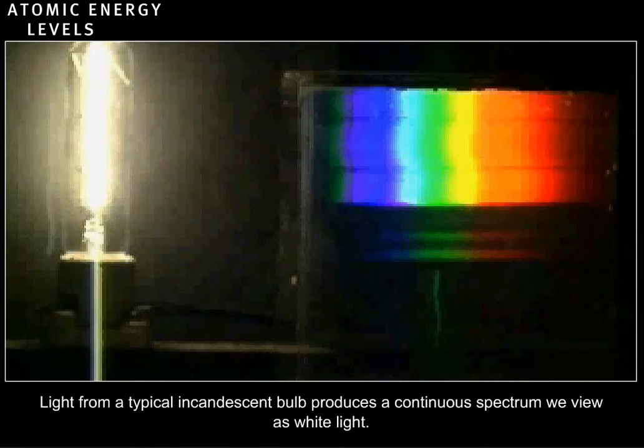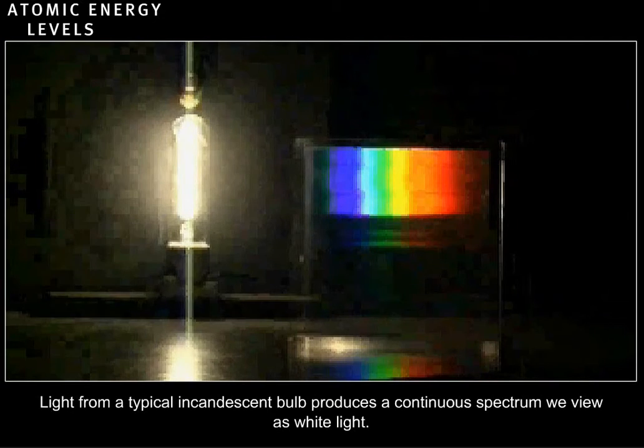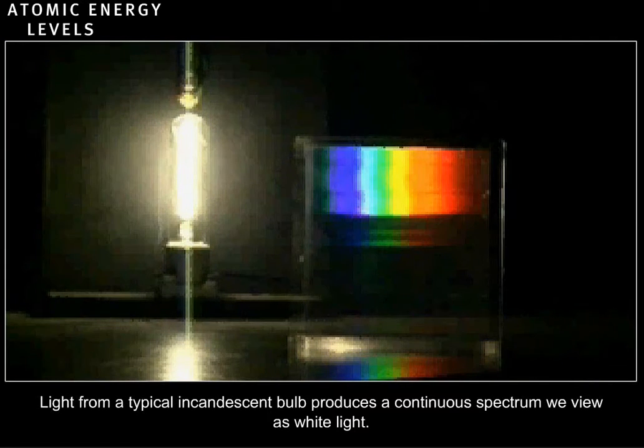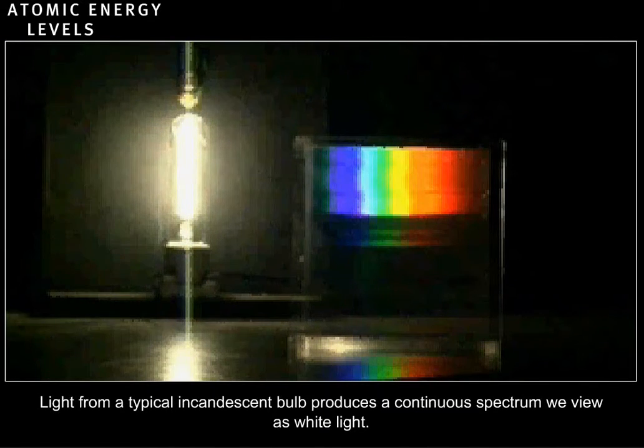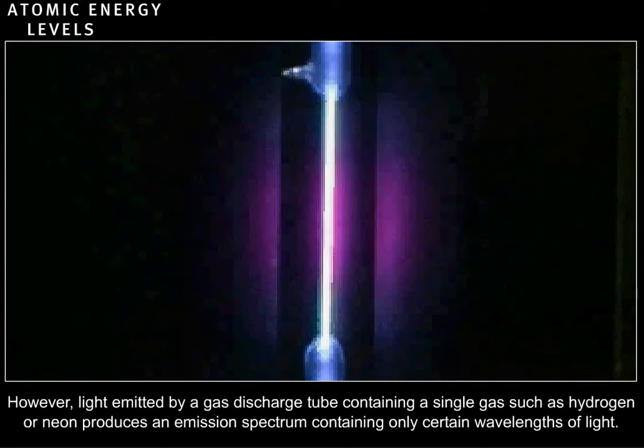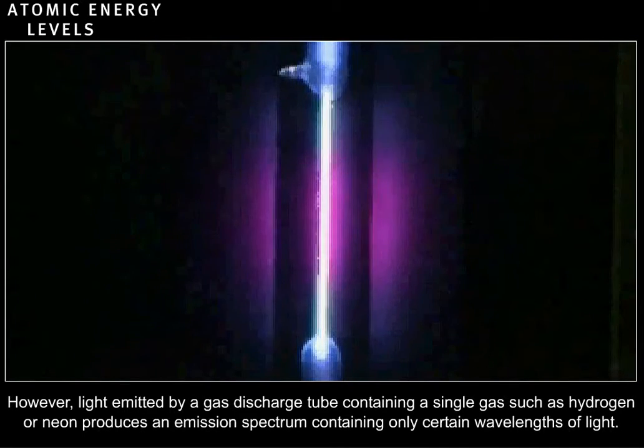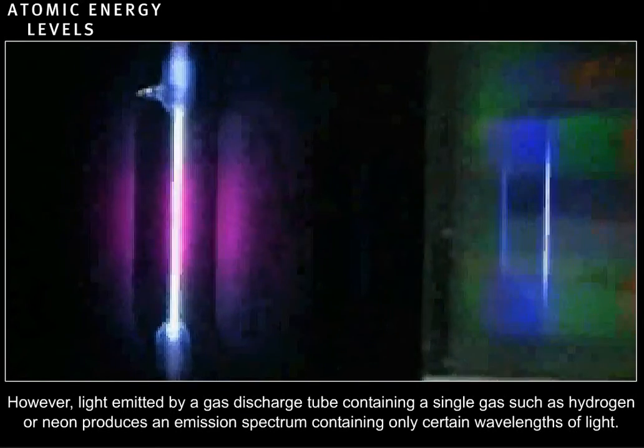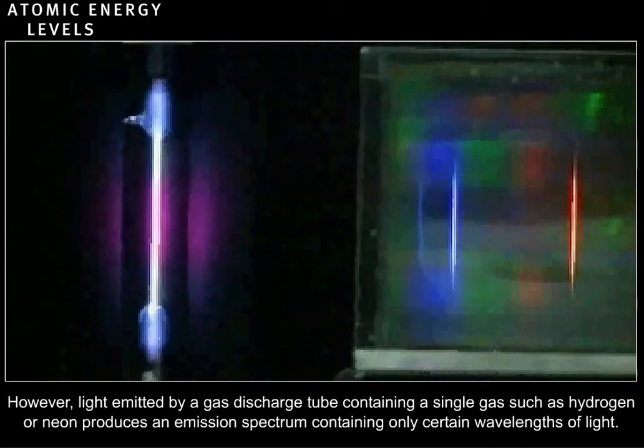Light from a typical incandescent bulb produces a continuous spectrum we view as white light. However, light emitted by a gas discharge tube containing a single gas, such as hydrogen or neon, produces an emission spectrum containing only certain wavelengths of light.